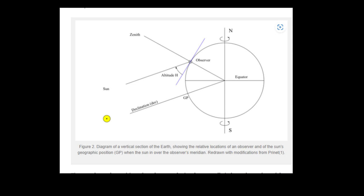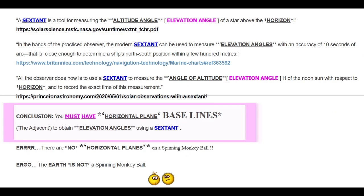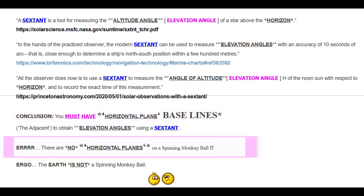Then he draws his conclusion. You must have horizontal plane baselines to obtain elevation angles using a sextant. There is no horizontal plane on a spinning ball. This is obviously wrong, but that doesn't bother him at all.